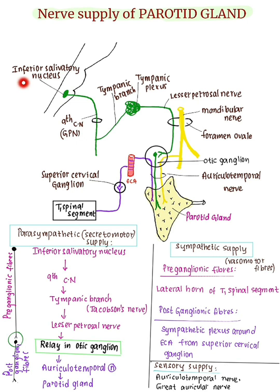Parasympathetic supply: The preganglionic fibers arise from the inferior salivatory nucleus, which is present in the medulla. The fibers then pass through the glossopharyngeal nerve, the tympanic branch of the glossopharyngeal nerve, the tympanic plexus, the lesser petrosal nerve, and relay in the otic ganglion. Postganglionic fibers arise from cells in the otic ganglion, pass through the auriculotemporal nerve, and reach the parotid gland. Stimulation of parasympathetic supply produces watery secretion.